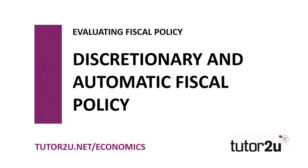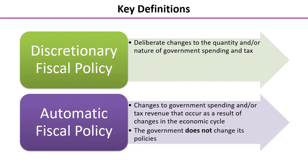In this video on the online lesson for evaluating fiscal policy, we're going to take a look at the difference between discretionary policy and automatic policy. Discretionary fiscal policy is any deliberate change to the quantity and/or nature of government spending and tax, whereas automatic fiscal policy is changes to government spending and/or tax revenue that occur simply as a result of changes in the economic or trade cycle. In this case, the government does not change its policies.